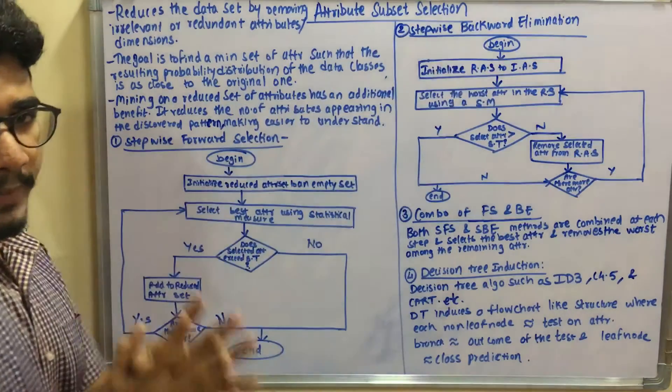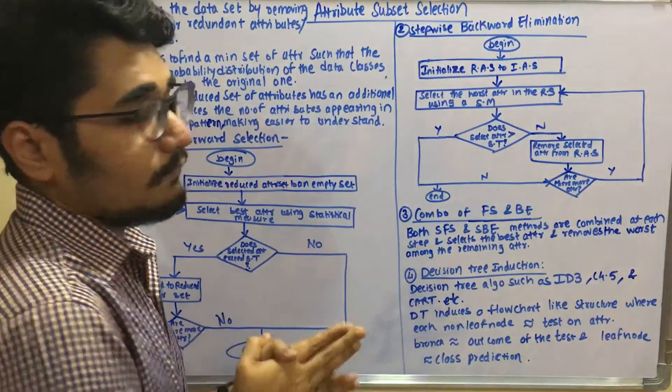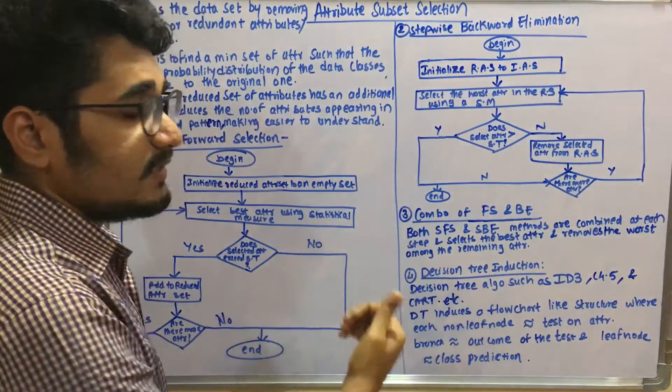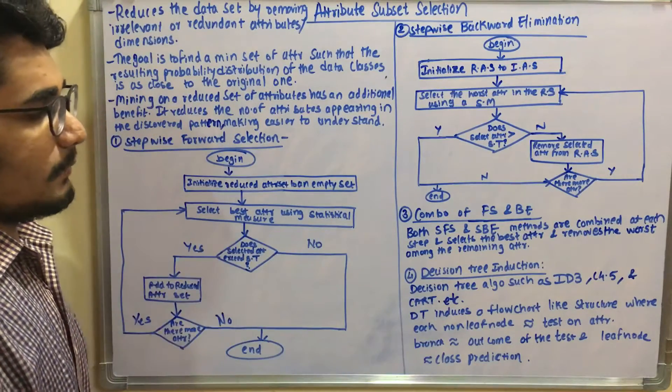Now to use the best of both, you combine these two techniques - stepwise forward selection and stepwise backward elimination. The methods are combined at each step to select the best attribute and remove the worst among the remaining attributes.